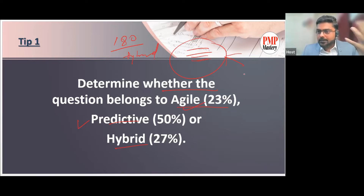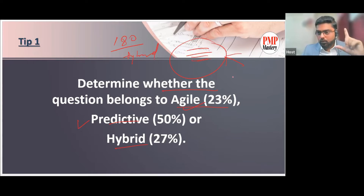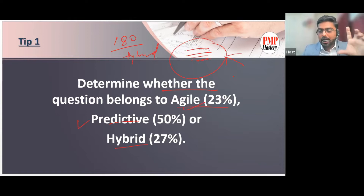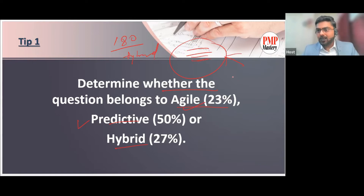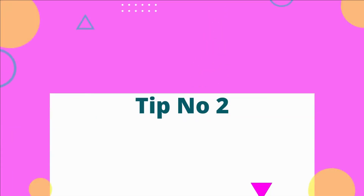The Agile mindset is different from the traditional mindset. So the first thing when you see the question is to identify which methodology it belongs to — traditional, Agile, or Hybrid.